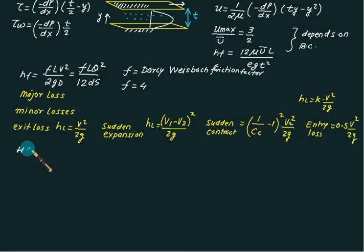Exit loss hl equals v²/(2g). Sudden expansion is (v1-v2)²/(2g). Sudden contraction is (1/Cc - 1) × v²/(2g), where Cc is coefficient of contraction.